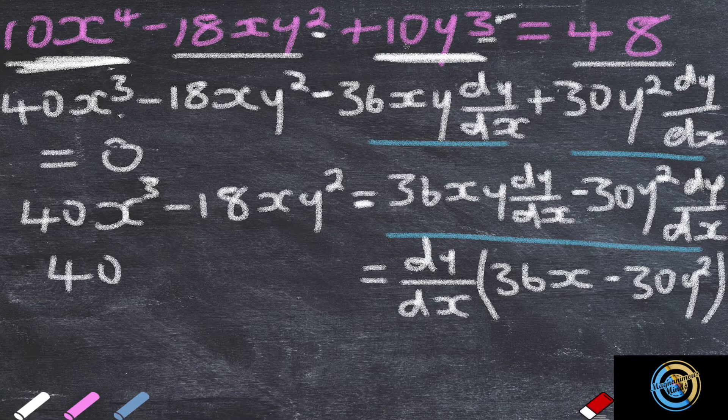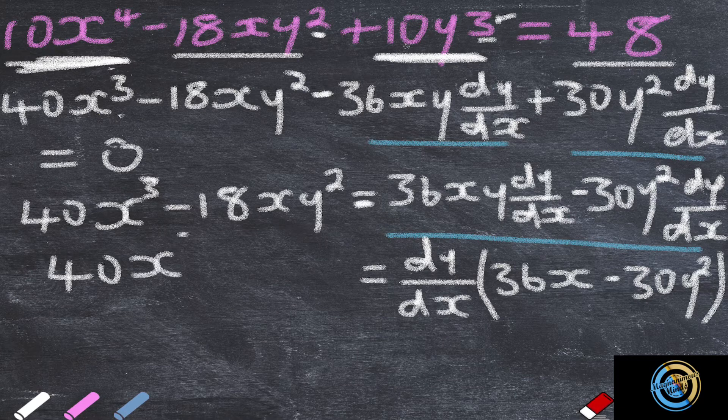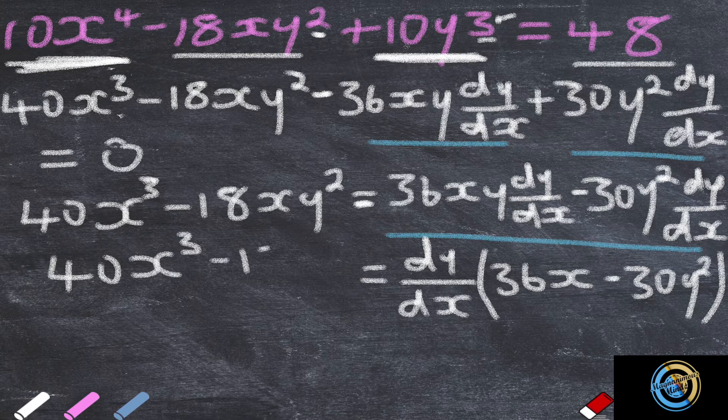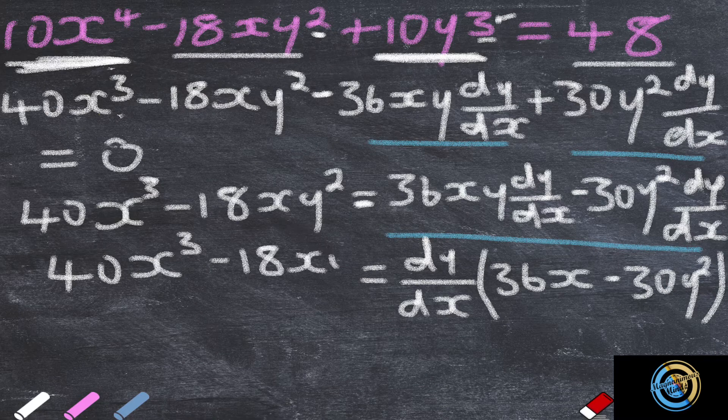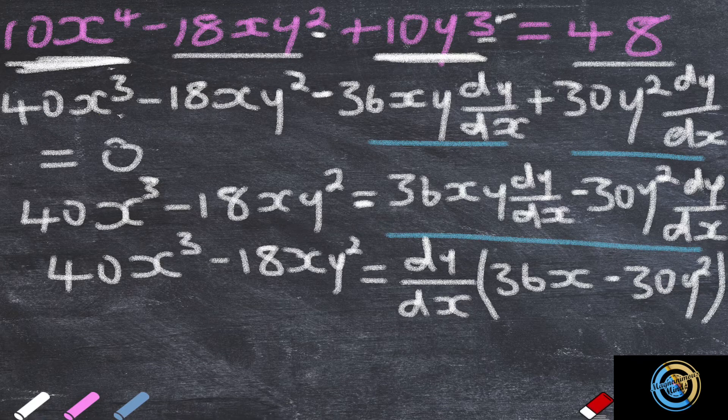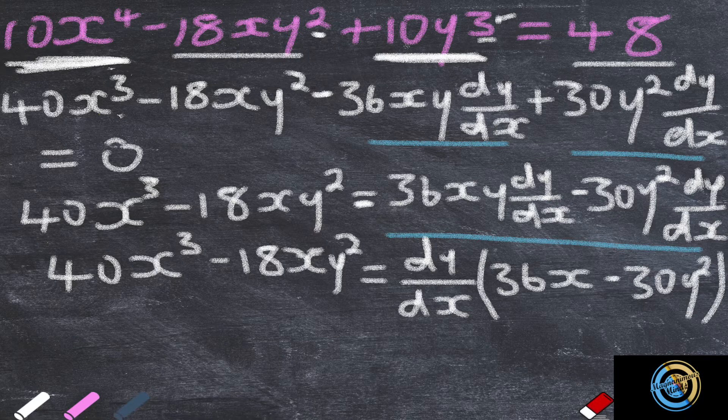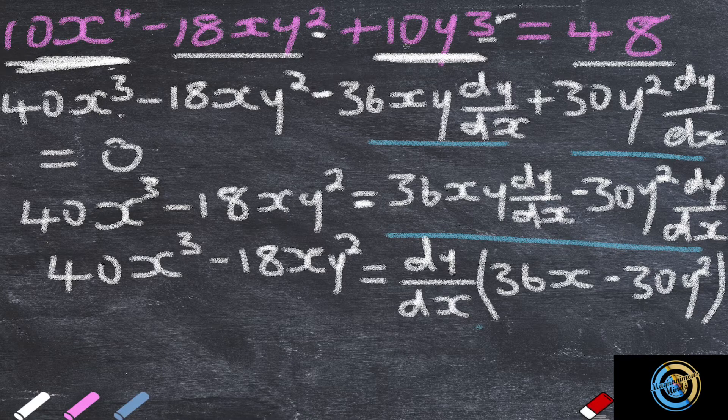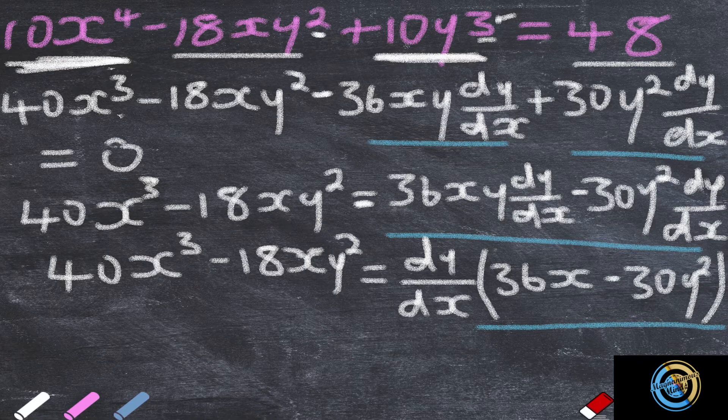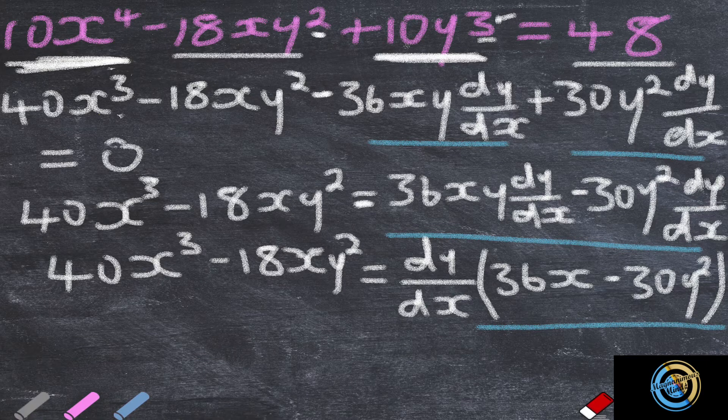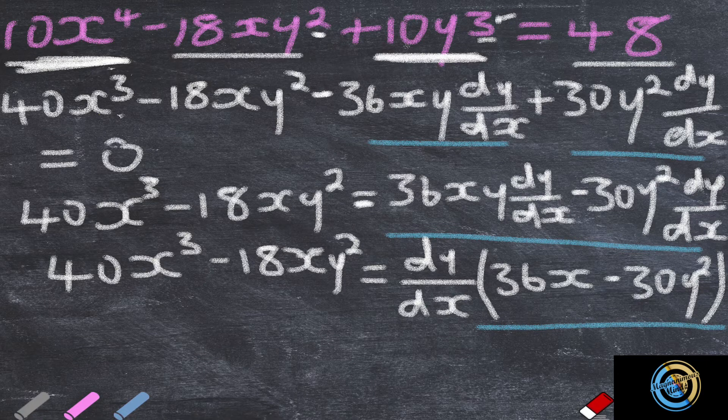Then from there we divide both sides by this so that we are left with the dy over dx.